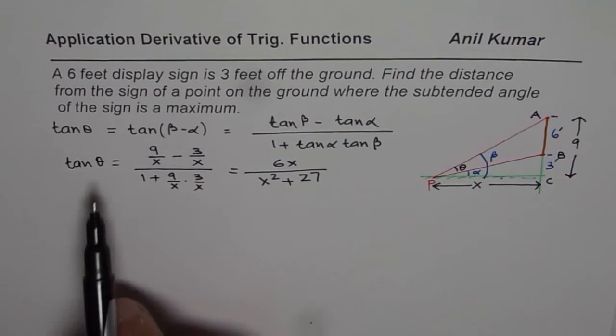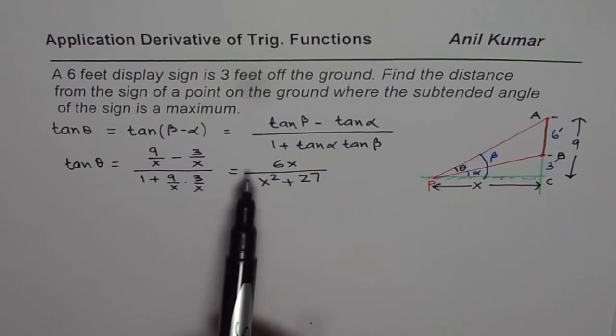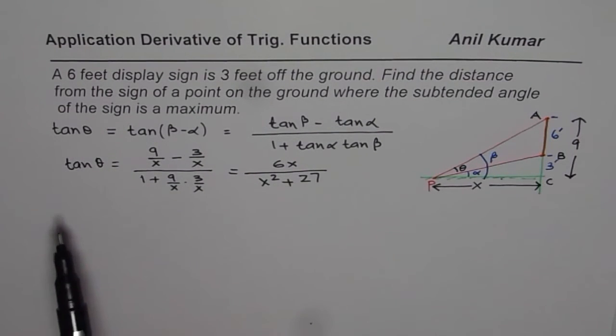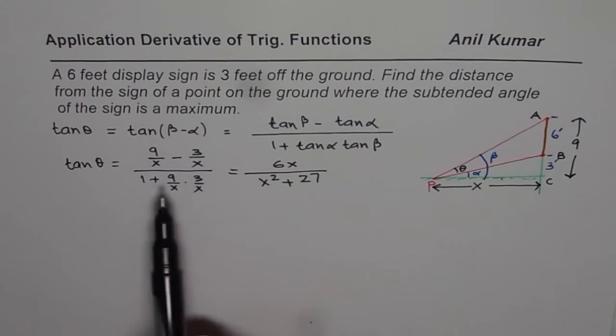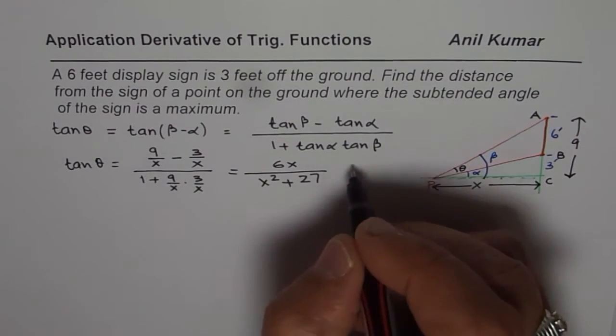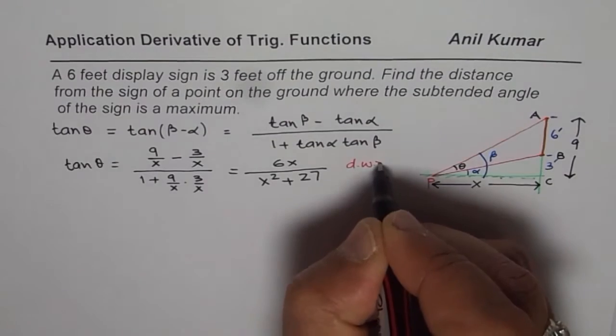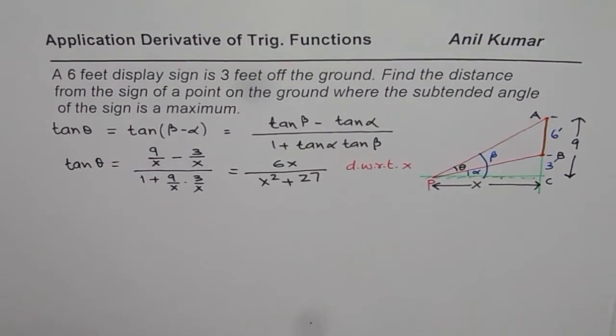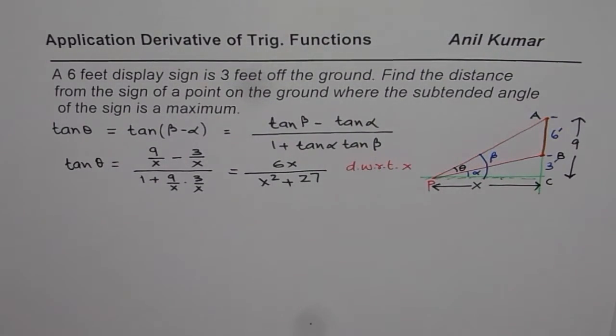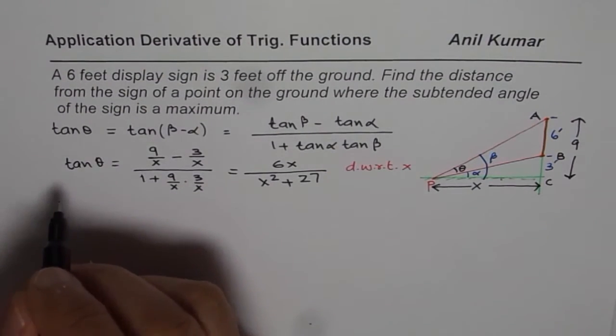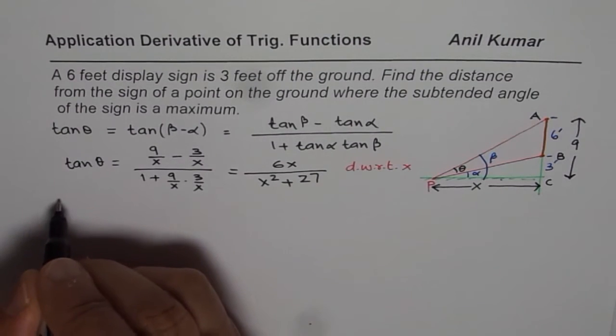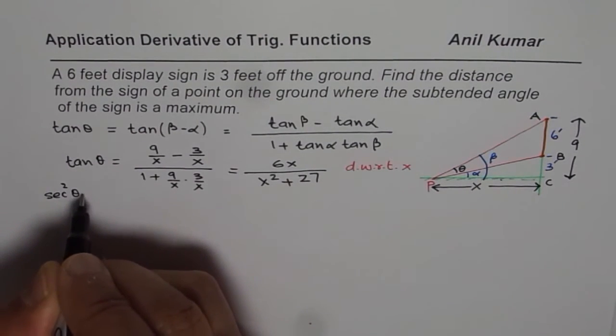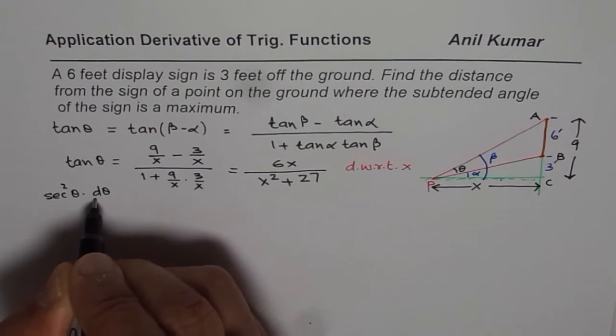Perfect. Now we have two variables to work with, theta and the angle X. We can take derivative with respect to X. That is our function, right? So we can take derivative with respect to X on both sides. So at this stage, we are taking derivative with respect to X, right? On both the sides. So in that case, what do you get? So you get derivative of tan theta secant square theta. So we get secant square theta times d theta dx, right?